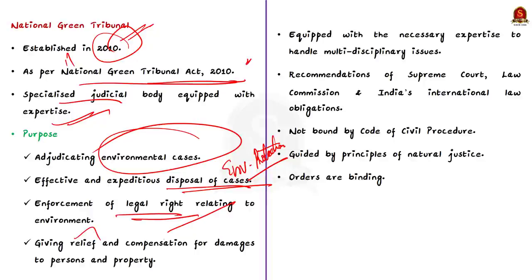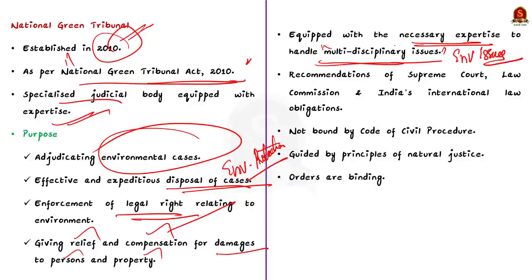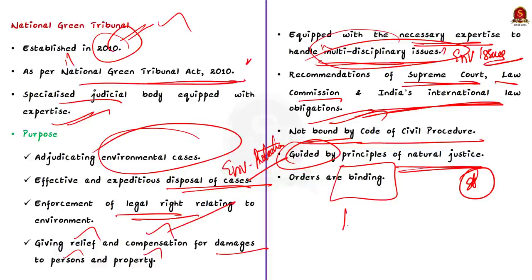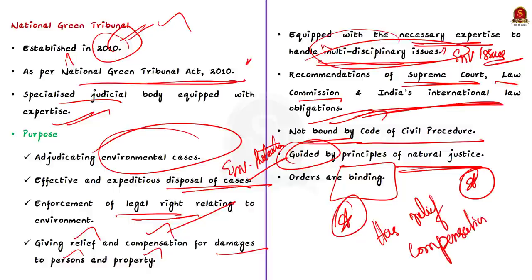The National Green Tribunal was established in 2010 under the National Green Tribunal Act. It is a specialized judicial body equipped with expertise solely for adjudicating environmental cases. It is established for effective and expeditious disposal of cases relating to environmental protection and conservation of forests and other natural resources, including enforcement of legal rights relating to environment and giving relief and compensation for damages to persons and property. The tribunal is also equipped to handle environmental disputes involving multidisciplinary issues, set up as per recommendations of the Supreme Court, Law Commission, and India's international law obligations.